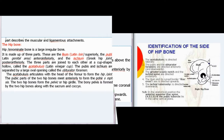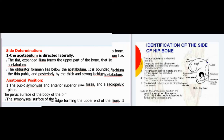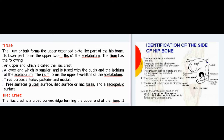Side determination: The acetabulum is directed laterally. The flat expanded ilium forms the upper part of the bone that lies above the acetabulum. The obturator foramen lies below the acetabulum; it is bounded anteriorly by the thin pubis and posteriorly by the thick and strong ischium. Anatomical position: The pubic symphysis and anterior superior iliac spine lie in the same coronal plane. The pelvic surface of the body of the pubis is directed backwards and upwards. The symphyseal surface of the body of the pubis lies in the median plane.